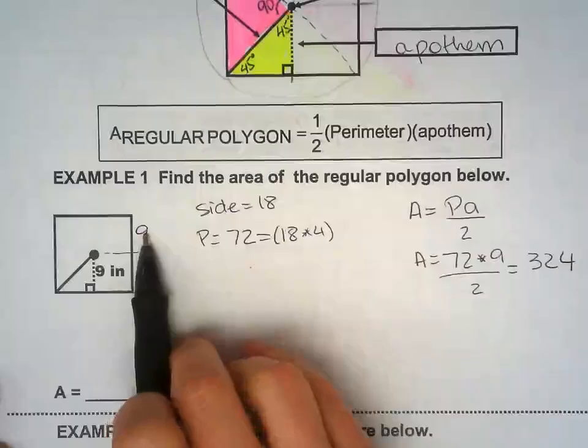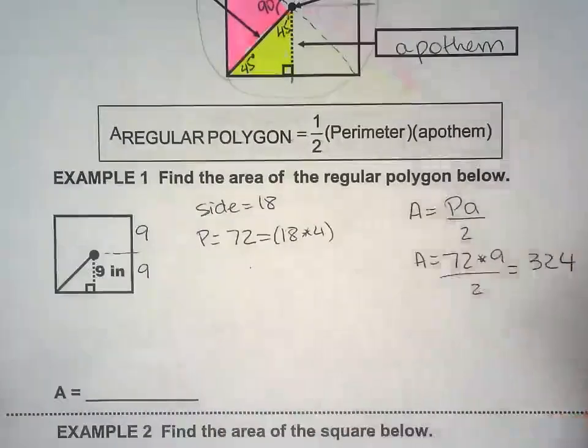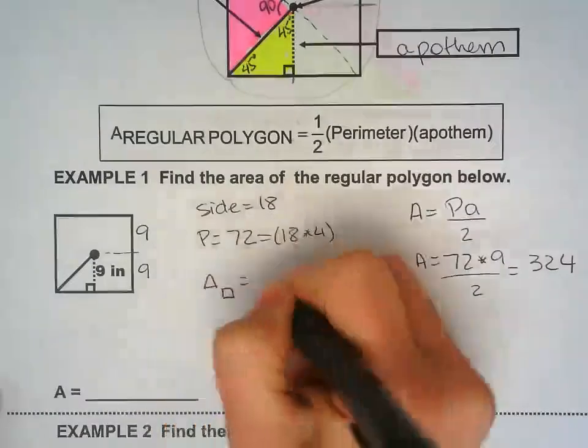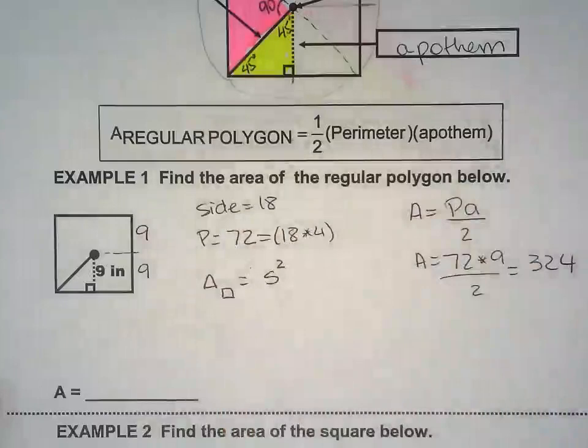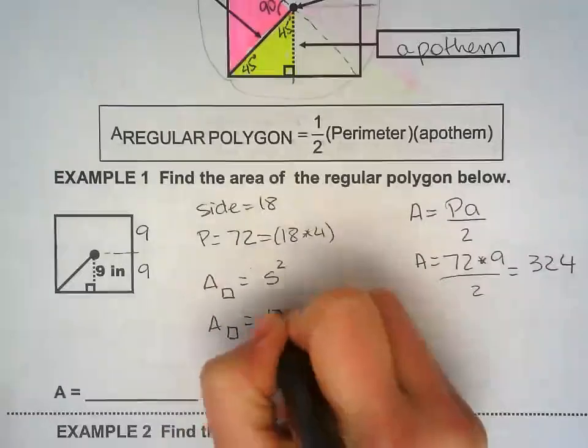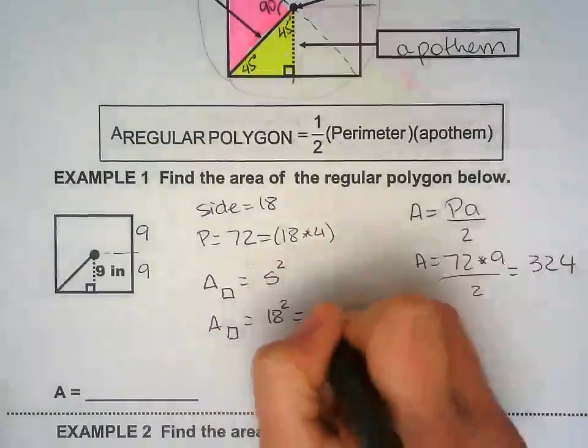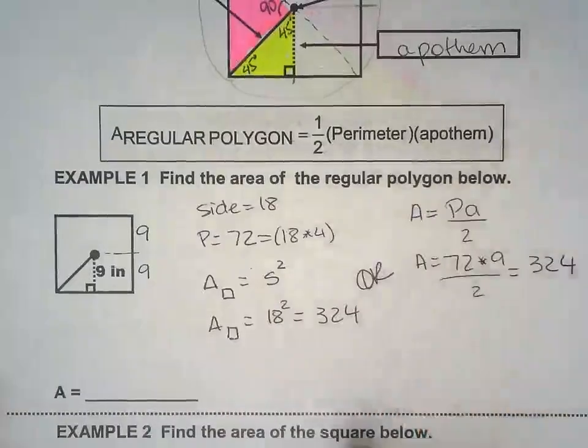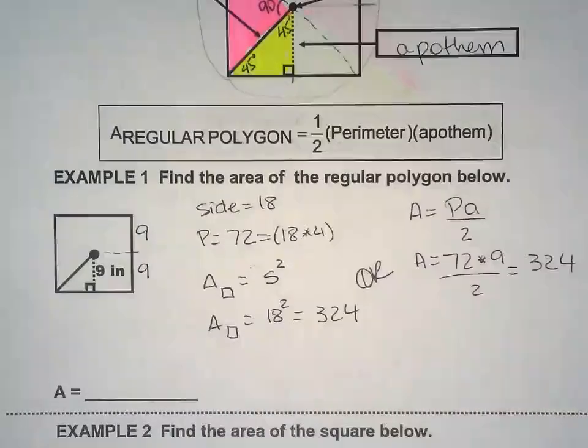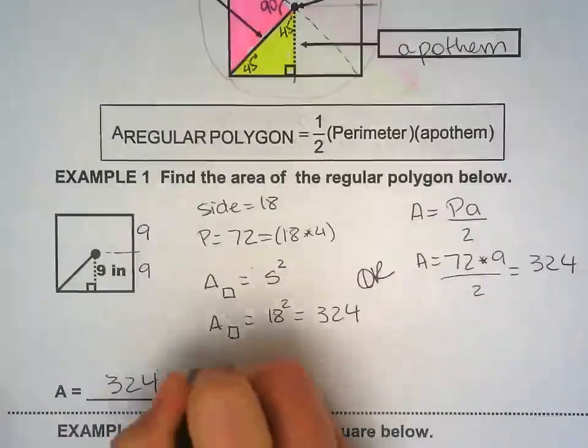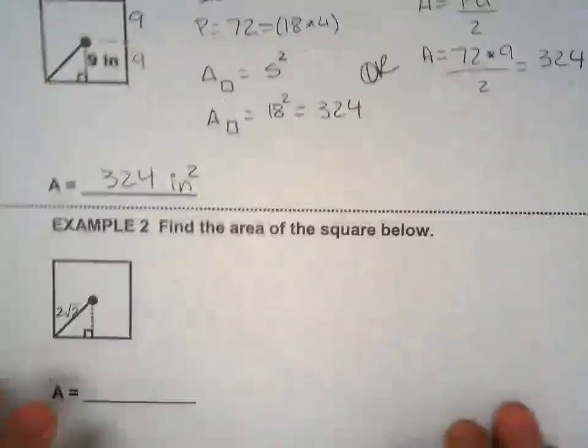Now, everybody knows that for you to find the area of a square, you square the side. So area of a square, you get the side and you square it. That's why it's called a square. So area of a square is the side squared, same as 324 that you just found using the formula. So you can do it this way or this way. Doesn't matter. You're gonna get the same answer. 324 square inches.